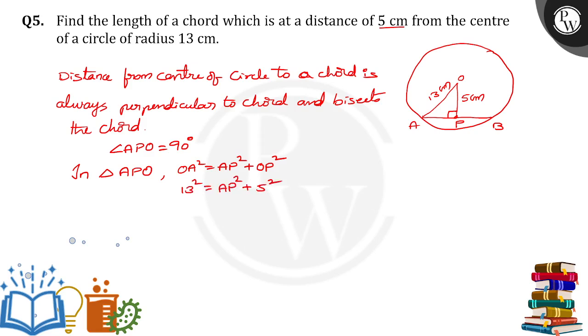So 13 square, 169 minus 25 is equal to AP square. So AP square is equal to 144. So AP is equal to root over 144. So AP is equal to 12 cm.